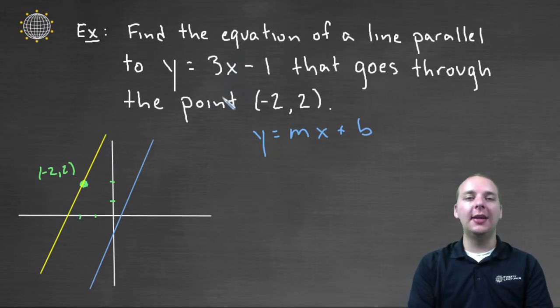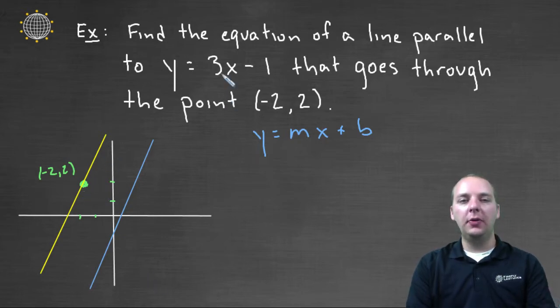Well hopefully you looked at the line they provided you, the blue line, and hopefully you noticed that its slope was three. Up three over one, up three over one.